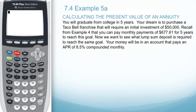In Example 5a, we will compare: instead of making monthly payments of $677.61 for five years, how much would we need for a lump sum deposit to reach the same goal? The money in this case will be in an account that pays an APR of 8.5% compounded monthly.